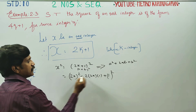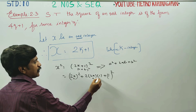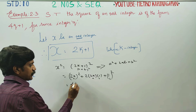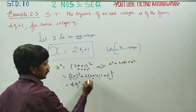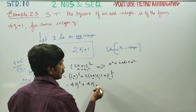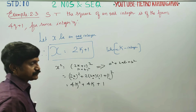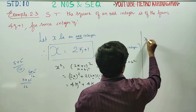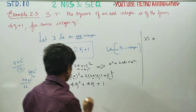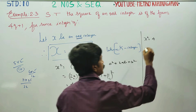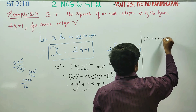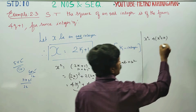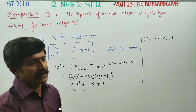Here a is 2k and b is 1. Applying the formula: (2k)² is 4k², 2 times 2k times 1 gives 4k, and 1 squared is 1. So x squared equals 4k² plus 4k plus 1. Taking 4 as common from the first two terms: x squared equals 4(k² + k) plus 1.